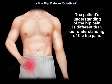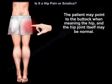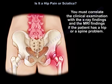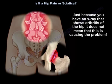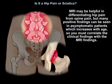The patient's understanding of hip pain may differ from ours — the patient may point to the buttock when meaning the hip, and the hip joint itself may be normal. You must correlate the clinical examination with x-ray and MRI findings. Just because an x-ray shows arthritis of the hip doesn't mean it is causing the problem. MRI may help differentiate hip pain from spine pain, but many positive findings can be seen in asymptomatic patients, increasing with age, so clinical and MRI findings must be correlated.